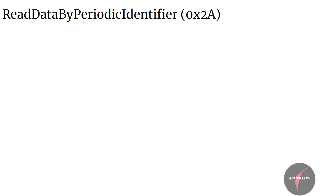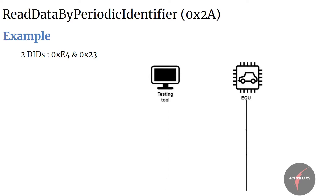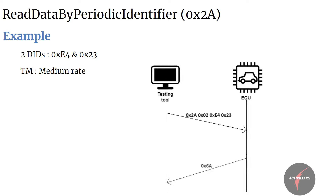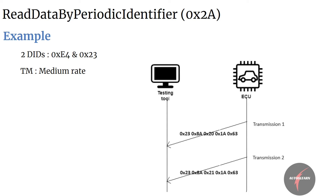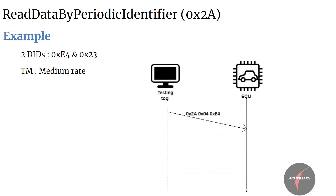Let's understand Read Data by Periodic Identifier with an example. Assume the client requests two DIDs — 0xE4 and 0x23 — to read periodically at medium rate. The client sends the request with transmission mode set to 0x02. The server sends the initial positive response, then sends the periodic positive response for DID 0xE4, followed by DID 0x23 separately. If the client wants to stop the periodic transmission for DID 0xE4, the client sends the request with transmission mode set to 0x04, and the server sends the initial positive response to confirm.